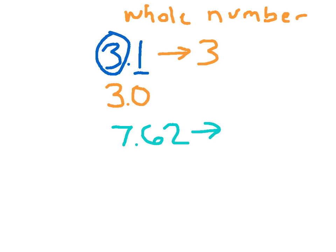7 and 62 hundredths to the nearest whole number — again I circle that 1's place. Because the 6 here, that 6 tenths, is 5 or bigger, the 7 has to go up. The 7 becomes an 8. Would I write 8.00 for that whole number? No — all other digits stay the same.